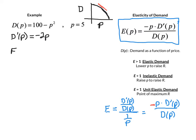So elasticity for this scenario is a function of price. It's going to be negative P times the derivative of D, so that's going to be negative 2P, all divided by D of P, 100 minus P squared. So when we simplify it, we end up with 2P squared divided by 100 minus P squared.